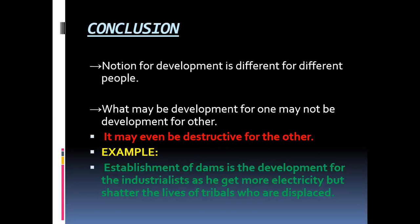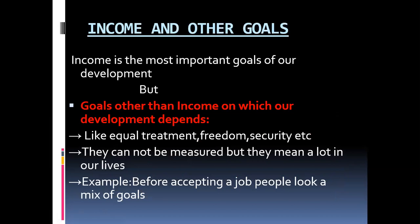The next topic is income and other goals. The role of income in our life is very important — without money we cannot survive. But besides income, we need some other things also in our life. Money is not everything, but without money we cannot buy anything. Besides seeking more income, people also seek things like equal treatment, freedom, security, and respect of others — things which money cannot buy but which are essential in one's life.